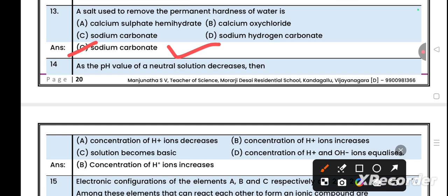Calcium sulphate hemihydrate is nothing but POP, used to make articles and fractured cases. Calcium oxychloride is used as a bleaching agent. Sodium hydrogen carbonate is used in bakery products and catering products.